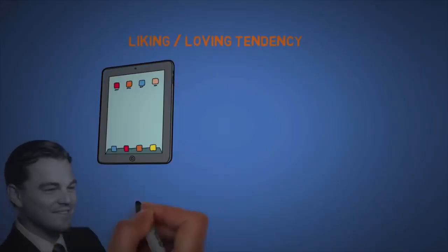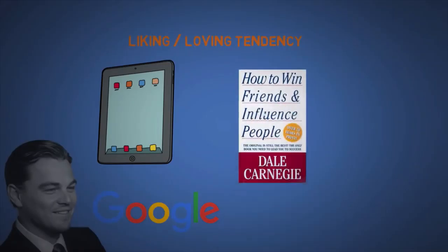The second is liking slash loving tendency. We tend to ignore the faults of other people, products, or companies that we admire. One of my favorite books on this subject is How to Win Friends and Influence People by Dale Carnegie. But in general, just be nice, look sexy, and people will be hypnotized by you.